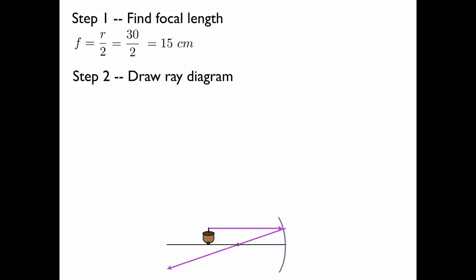And conversely, a ray which goes through the focal point on its way to the mirror will come out parallel, and where those two rays intersect is where the image will be located.